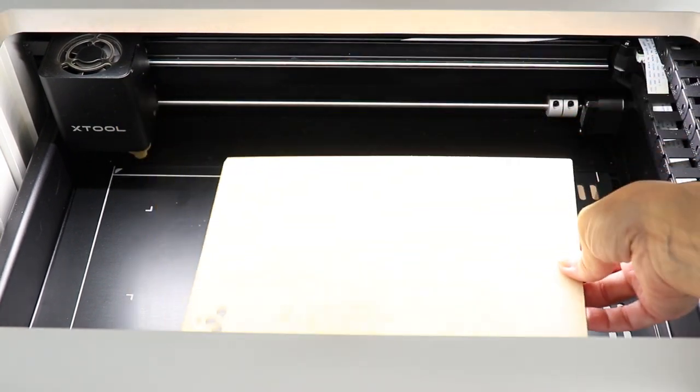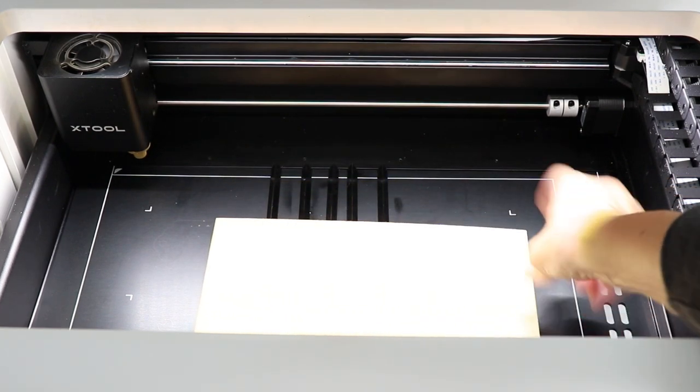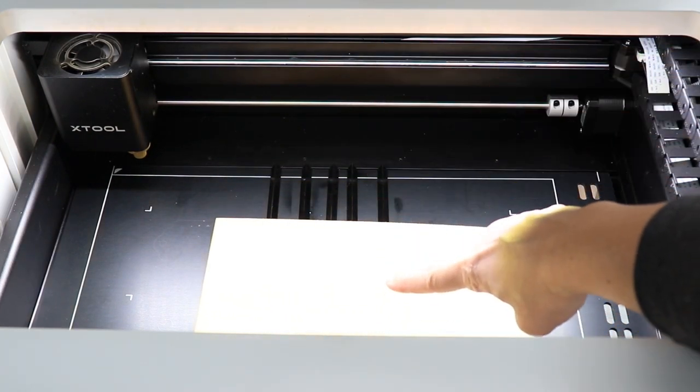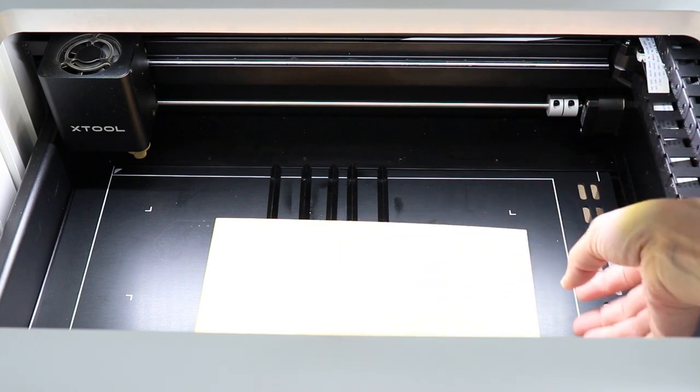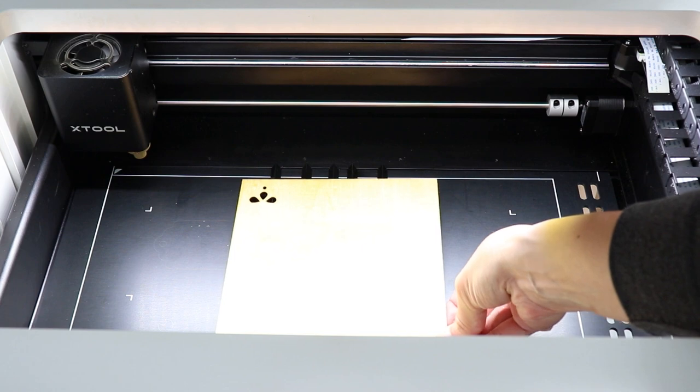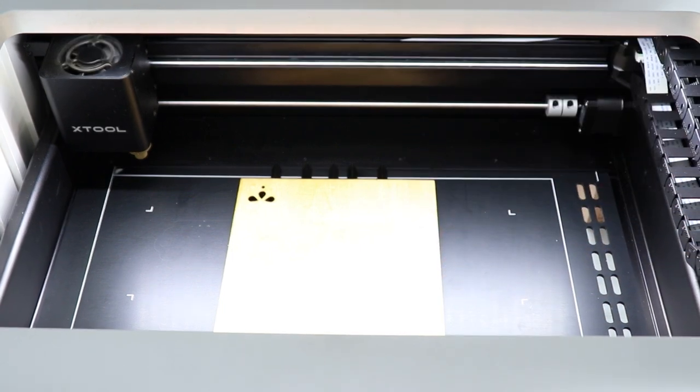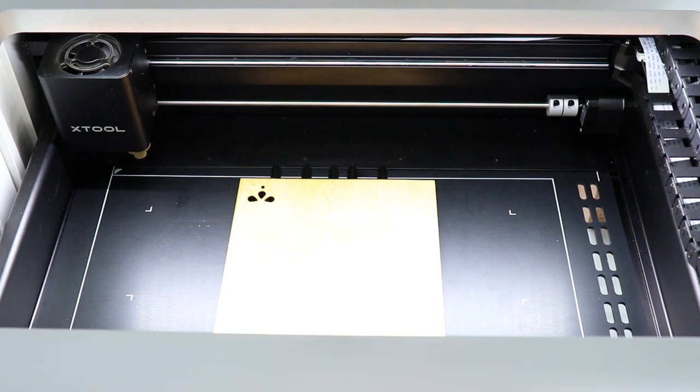Then I can take my piece of wood and just place it in here. There is a little red dot that shines down. I kind of want that in the middle of my material, that's going to help line everything up really well. Now when I close this the camera will turn on and we can go over to Xtool Creative Space to create our design.